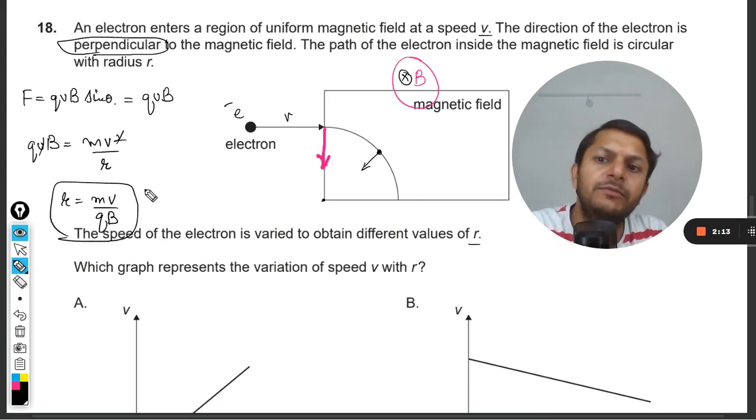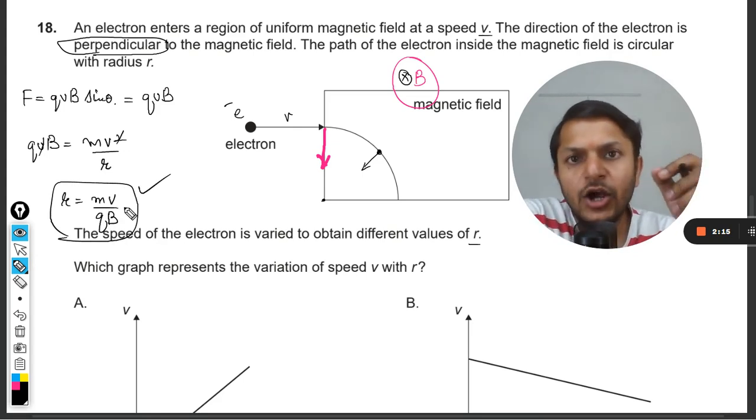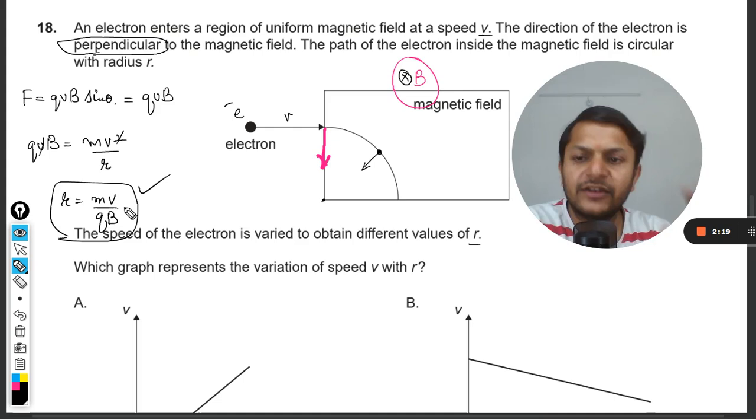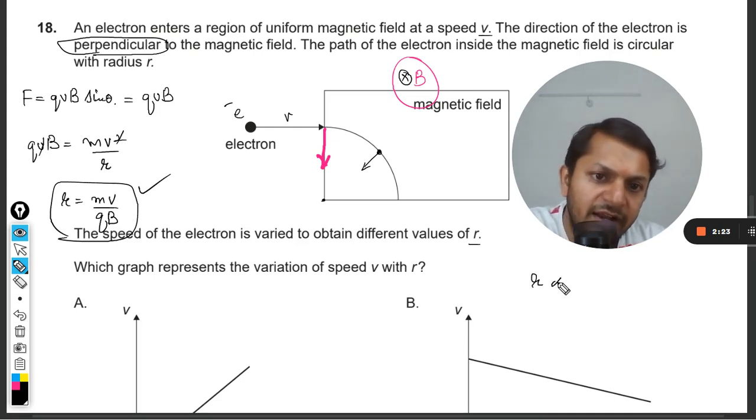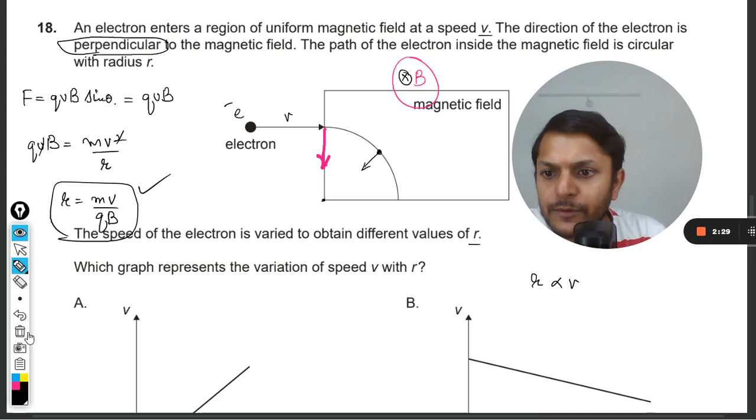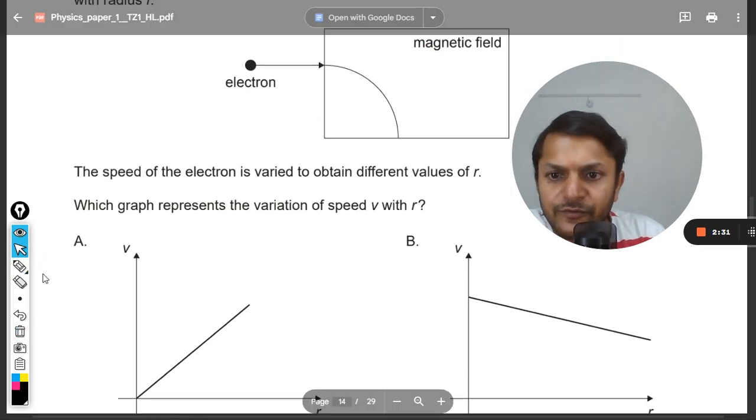Either you would be remembering this formula or you have to derive this formulation in the examination—that is on you what you want to do. Clearly the radius r is directly proportional to the velocity vector v, so there will be a straight line passing through the origin.